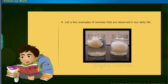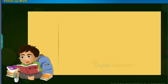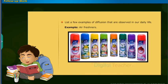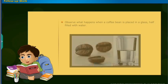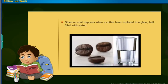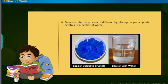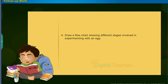List a few examples of osmosis that are observed in our daily life. Example is as shown on the screen. List a few examples of diffusion that are observed in our daily life. Example: air fresheners. Observe what happens when a coffee bean is placed in a glass half filled with water. Demonstrate the process of diffusion by placing copper sulphate crystals in a beaker of water. Draw a flowchart showing different stages involved in experimenting with an egg.